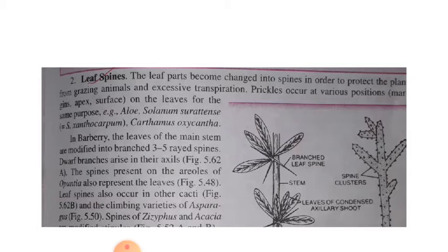Spines occur at various positions on the leaves for the same protective purpose. In some plants, leaves of the main stem are modified into branched spines with three to five branches arising in the axil. Spines are also present in cacti and climbing varieties of asparagus and acacia.